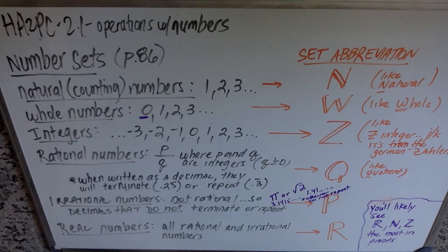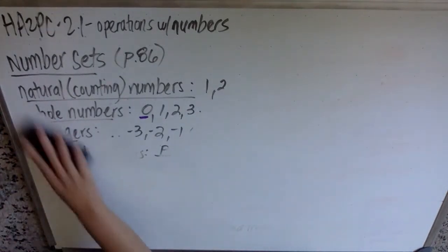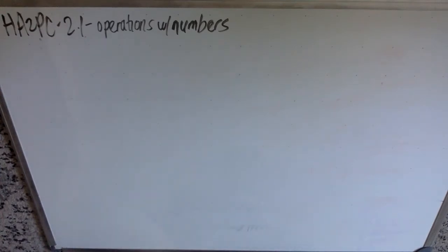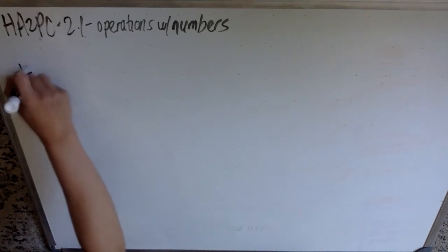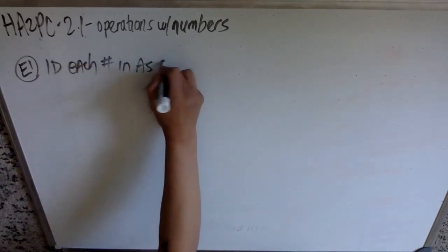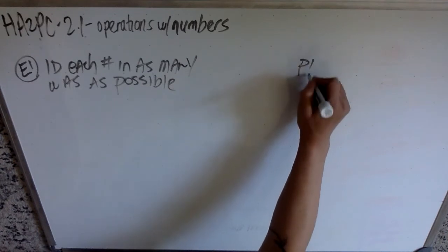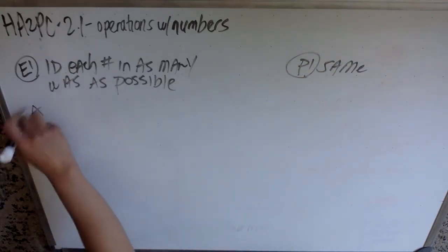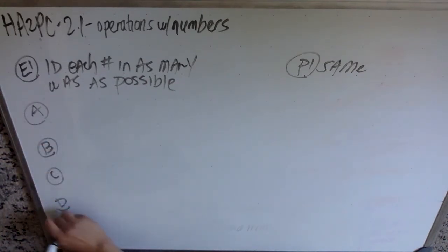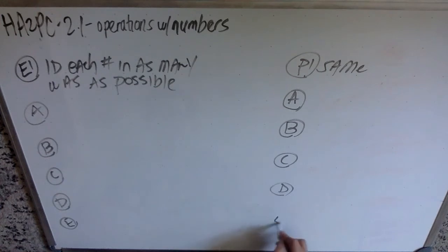What we're gonna do in a quick first example is we're gonna identify a couple numbers in as many ways as we possibly can. You can use the shorthand. You can also write it out. If you want to write the word real, you can, but if you just want to use that capital R, you can. In our example one, I'm gonna ask that you identify each number in as many ways as possible. And we're gonna do the same thing in P1.